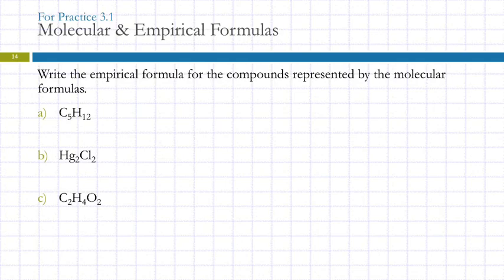So this is something that you should be able to do. Write the empirical formulas for the compounds represented by these different molecular formulas. So they're telling us these are the molecular formulas. What are the empirical formulas? We're looking at the subscripts. We've got 5 to 12. Can that be simplified? Now, the subscripts have to be whole numbers, so we can't go to 2½ to 6. Since that can't be simplified, the empirical formula is the same as the molecular formula because it's already in its simplest form.